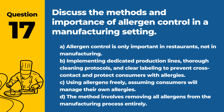Question 17. Discuss the methods and importance of allergen control in a manufacturing setting. a. Allergen control is only important in restaurants, not in manufacturing. b. Implementing dedicated production lines, thorough cleaning protocols, and clear labeling to prevent cross-contact and protect consumers with allergies. c. Using allergens freely, assuming consumers will manage their own allergies. d. The method involves removing all allergens from the manufacturing process entirely. Answer: b. Implementing dedicated production lines, thorough cleaning protocols, and clear labeling to prevent cross-contact and protect consumers with allergies. Effective allergen control is essential for consumer safety in food manufacturing.